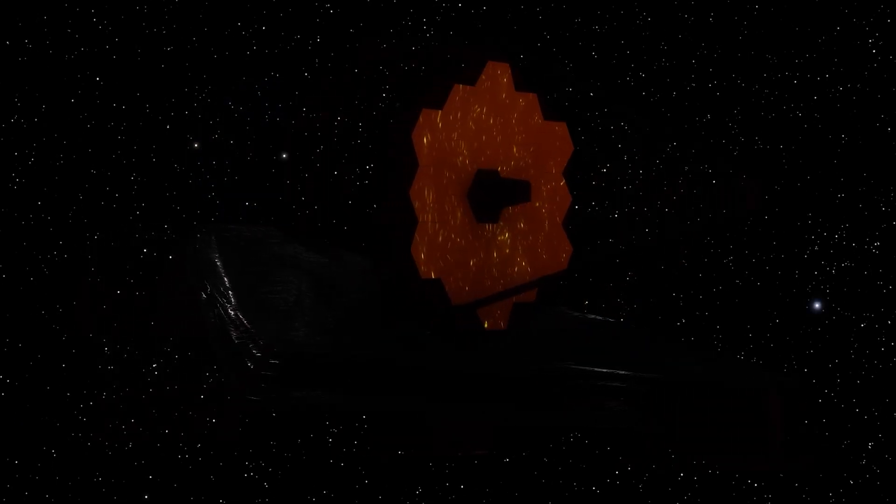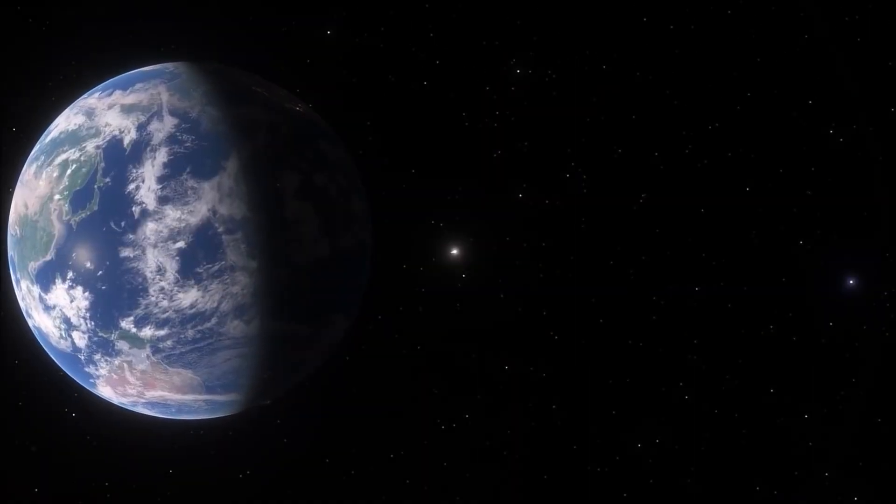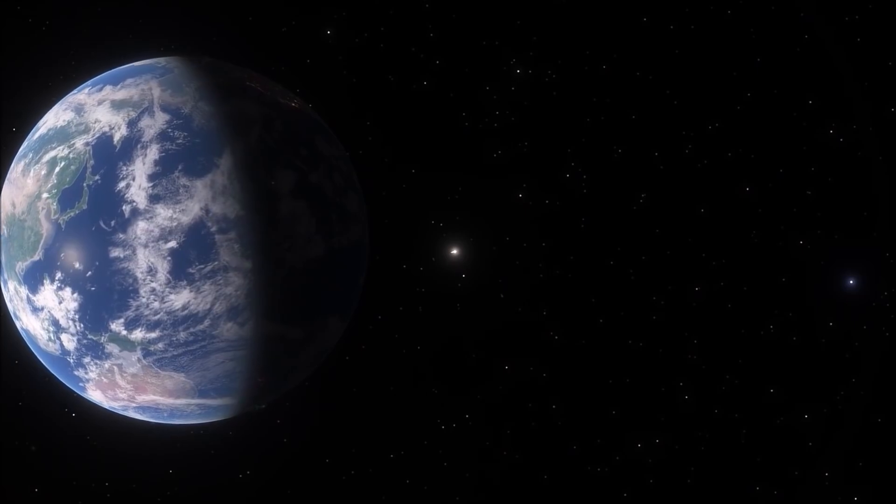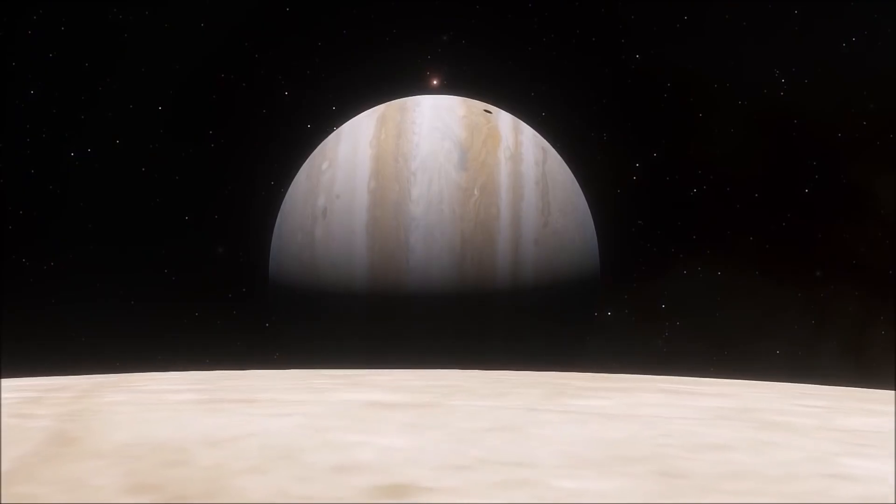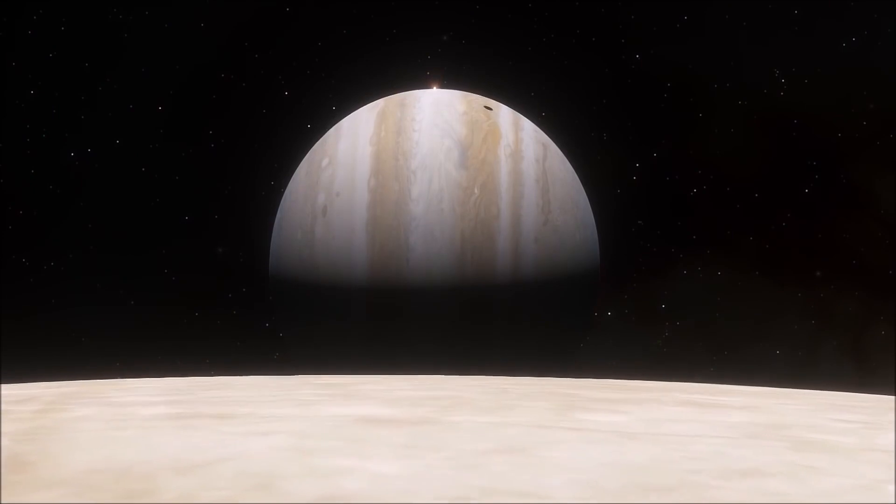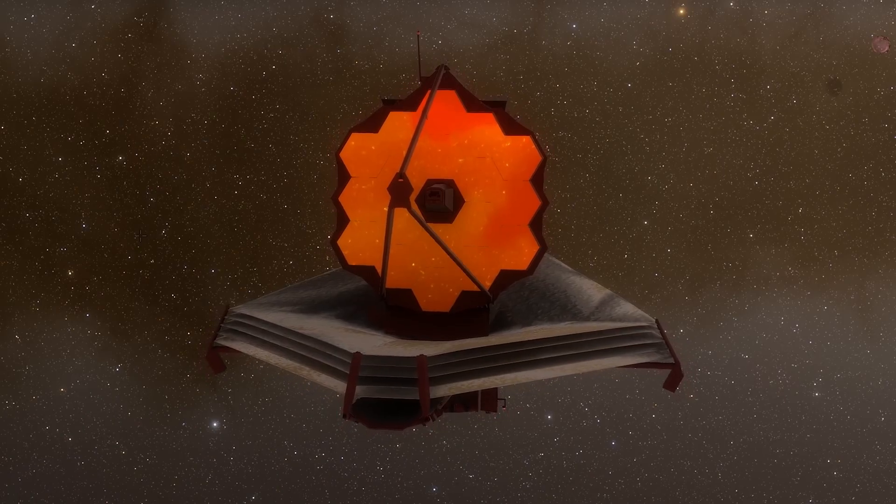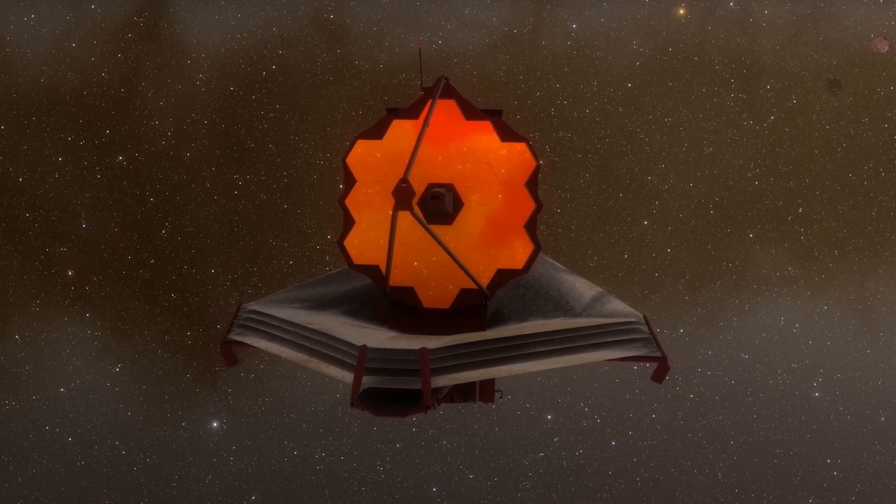Webb's MIRI instrument will also search for hot molecular gas near numerous young stars, which could indicate the formation of potentially habitable rocky planets. Much of the James Webb Space Telescope's early science work will focus on determining how planetary systems build molecules that may be crucial to the emergence of life.